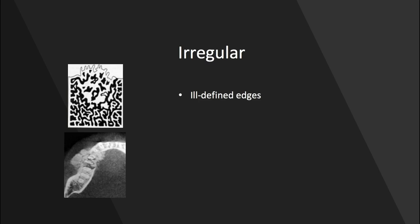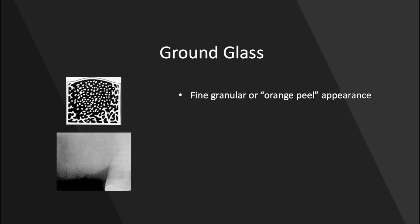We can also have irregular radiopacities. This one's characterized by ill-defined ragged edges. The classic lesion for this would be an osteosarcoma, like we see here. This is an aggressive tumor that destroys bone and creates new bone. The ground glass radiopacity is another important one to know for the board exam, defined by a fine granular or orange peel appearance.